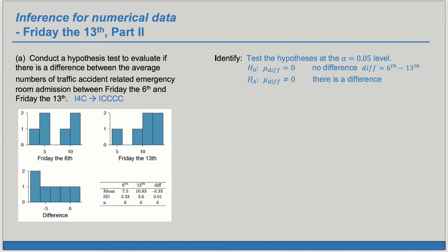So our alternate claim is two-sided. Remember that our hypotheses are about the unknown parameters — we have a small set of sample data, but our hypotheses are about the unknown parameters. Now we're going to choose: we're going to do a test on the differences, looking at the mean of that. So we're going to do a one-sample t-test for a mean on the paired differences.